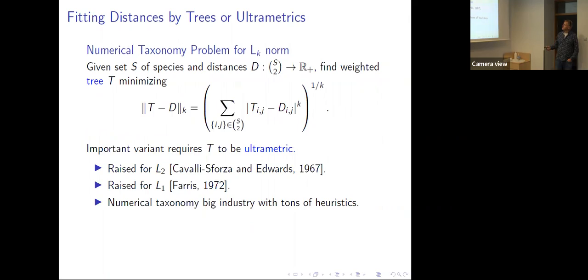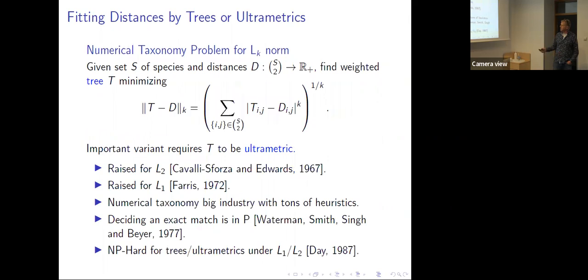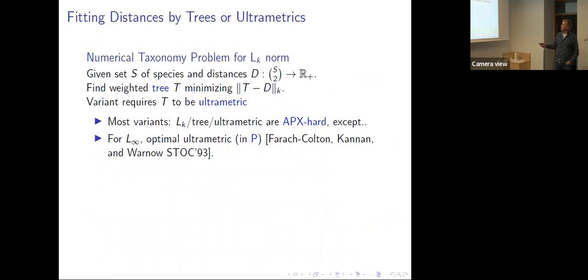This was first raised from L2, then raised in L1 — it's a huge industry. Deciding if there's an exact match is easy for both trees and ultrametrics, just been known for a long time. But it was also known to be NP-hard for both trees and ultrametrics in L1 and L2, and it's easy to show a similar proof that it's APX-hard. So almost everything is APX-hard, except for one case — a magic paper I'm going to get to — that for the infinity norm you can actually find an optimal ultrametric.